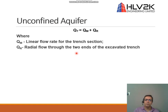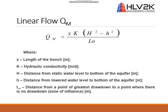We start with the unconfined aquifer. For the linear flow, we can use this equation, where x is the length of the trench, k is the hydraulic conductivity in meters per day, capital H is the distance from the static water level to the bottom of the aquifer, L0 is the distance from the lower water level to the bottom of the aquifer — the final water level we intend to reach. L0 is also the zone of influence, since it is linear flow rather than radial, but the concept is the same.